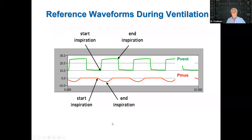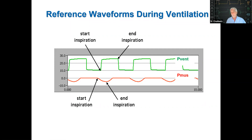The reference signal in all forms of synchrony evaluation has to be what the patient is doing — ideally muscle pressure (P_mus). Muscle pressure has actually been measured at the bedside and is embedded in proportional assist ventilation, though we rarely see it directly displayed on ventilators. A surrogate for muscle pressure might be esophageal pressure. This is our reference signal. The signal that's supposed to respond in synchrony is the airway pressure waveform — P_vent. You want P_vent and P_mus to be in synchrony.